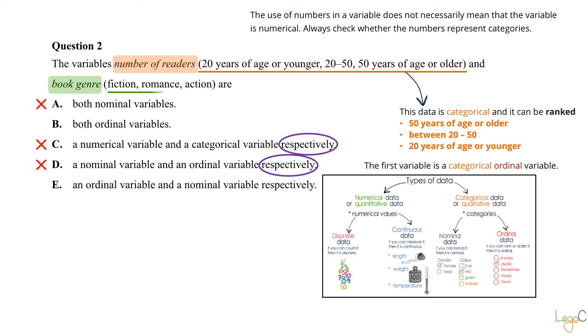Book genre is fiction, romance, or action. So this data can be branded fiction, romance, and action. So this variable is a categorical nominal variable. For this reason, we can cross out option B, and the answer we are after is option E: an ordinal variable and a nominal variable respectively.